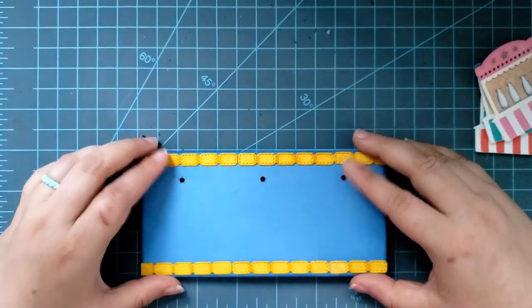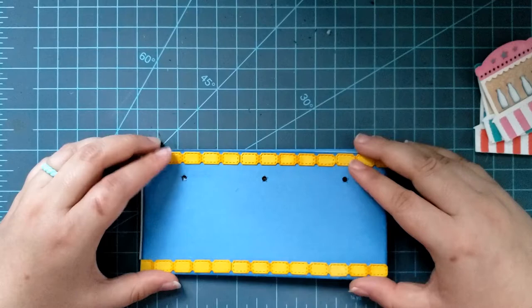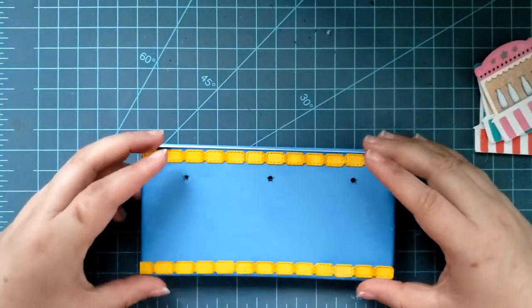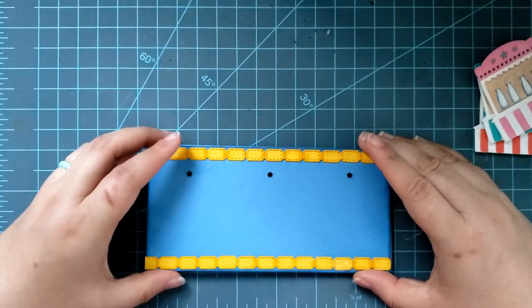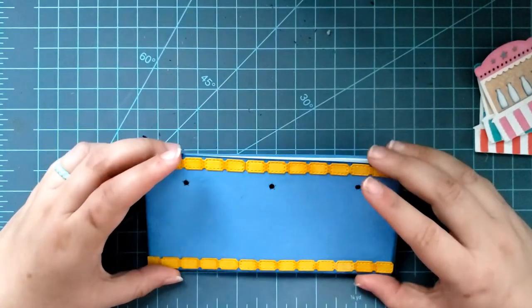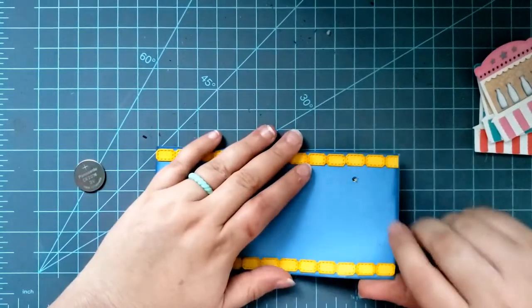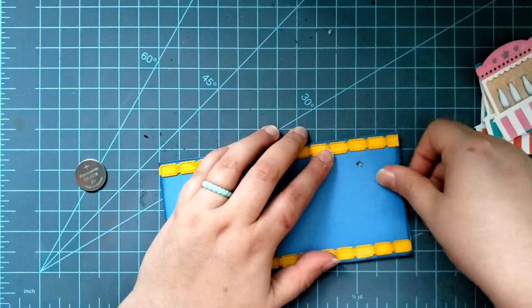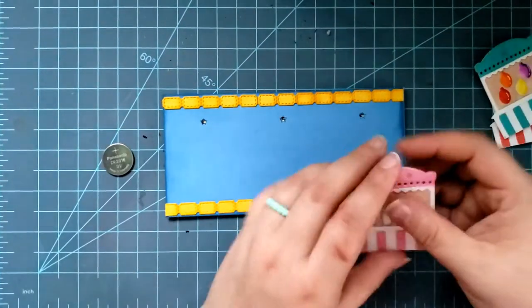I went ahead and put foam tape down around the circuit. I'm making sure to not cover up the lights or the effects sticker, but you can put foam tape over top of copper tape. Just a fun fact, make sure that you don't cover your stickers, but the rest can be covered with foam tape.